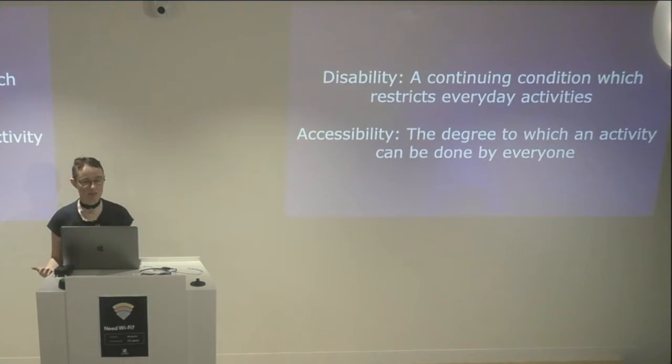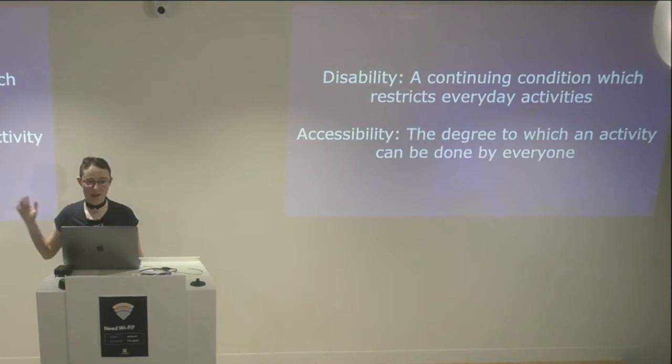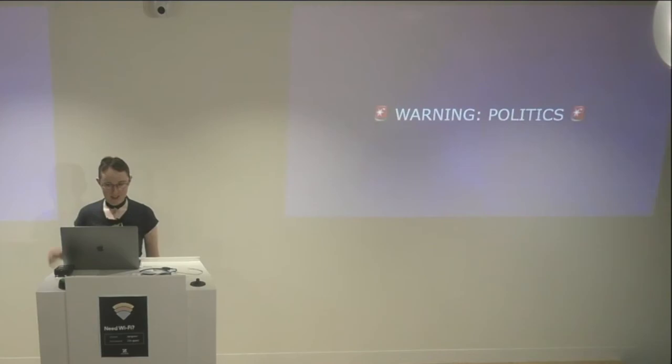And accessibility is not just a term about disability. Basically, it's the degree to which a thing, activity, or something can be done by everyone. Something could be accessible or inaccessible, but something might be accessible to blind people but not to deaf people. It might be accessible to white people but not to black people. It might be accessible to men but not to women. There are a lot of different ways to break down accessibility, and saying something is accessible doesn't mean it's accessible for everyone — it's a very nuanced term.